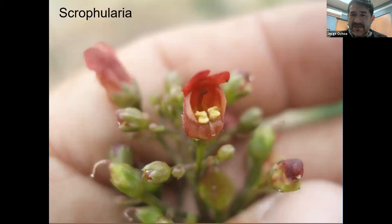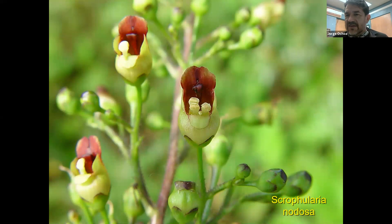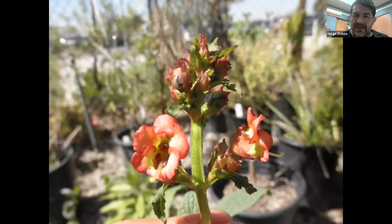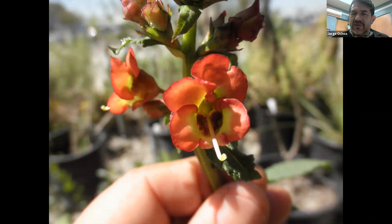Scrophularia is where the family gets its name. Here's that bee plant, Scrophularia californica, native to California coastal areas and chaparral, and then Scrophularia nodosa. Many of them have some potential as medicinal plants and have been used as traditional medicine by people. Here's Scrophularia macrantha, or the large-flowered individual — probably one of the showiest of them all that you may find.